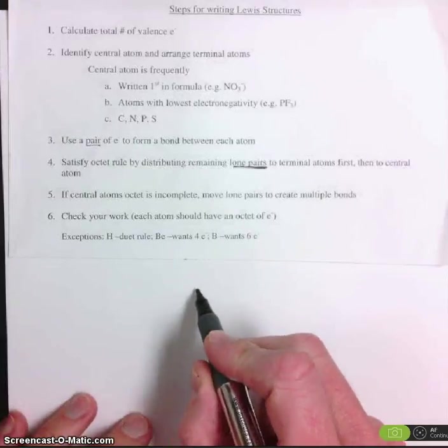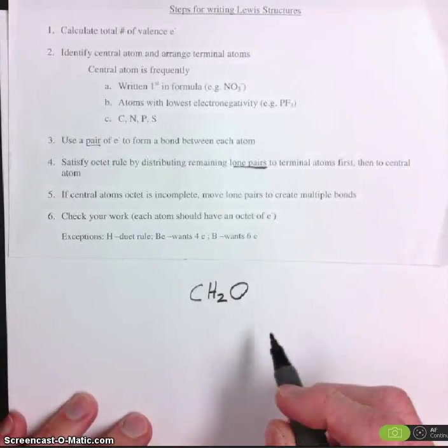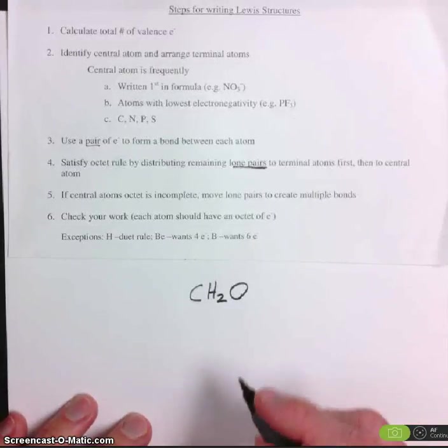In this video, we're going to complete the Lewis dot structure for CH2O. Step number one, calculate the total number of valence electrons.